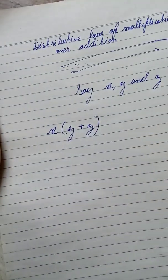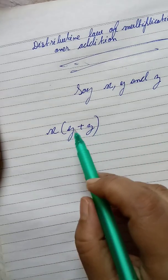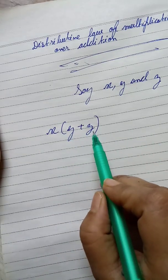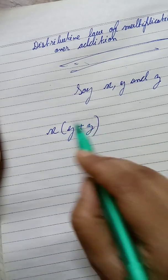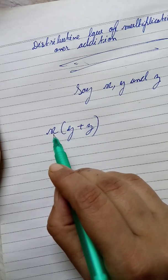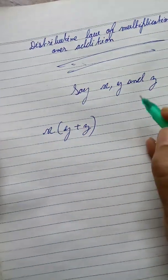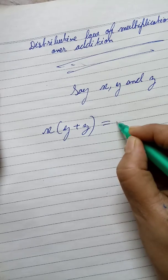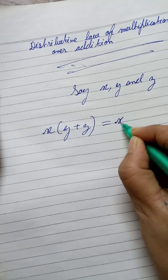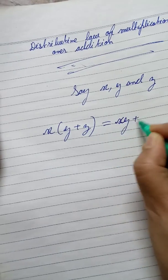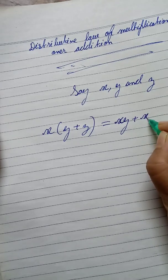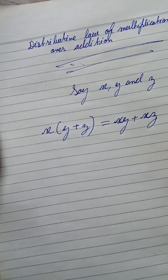If we add the rational number y with z and then multiply it by x, we can always express it as x into y plus x into z.